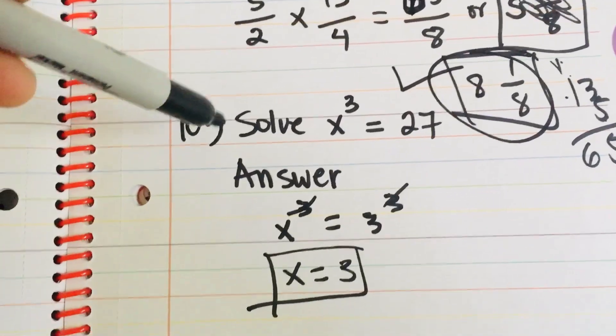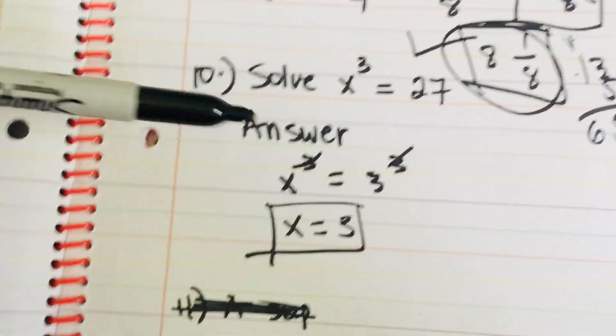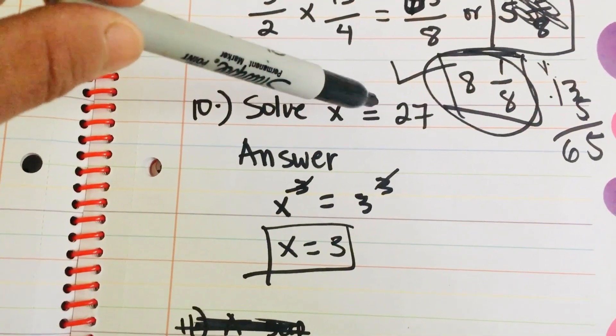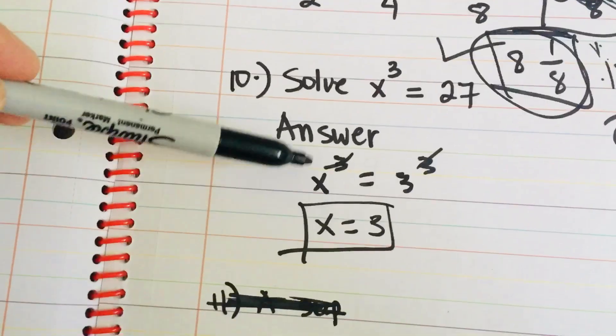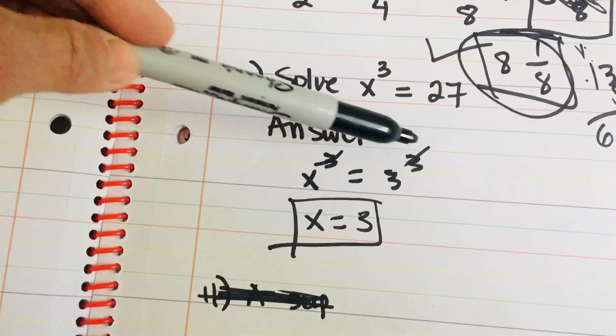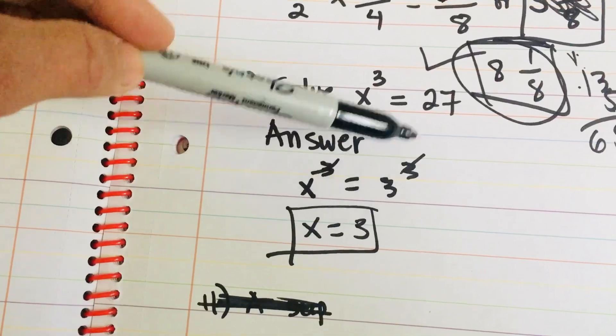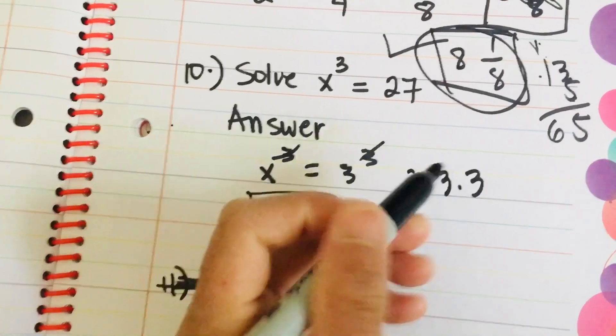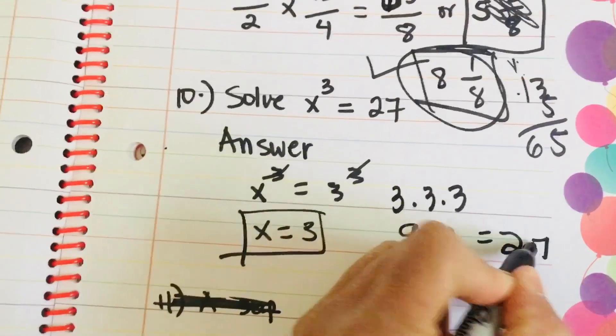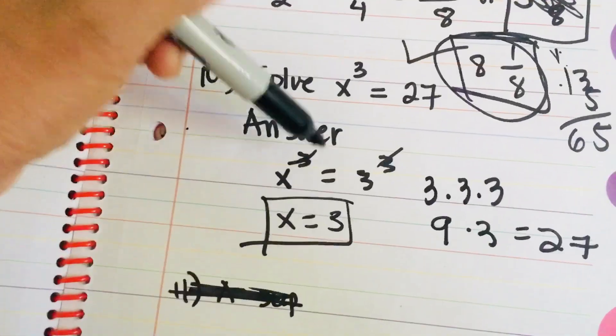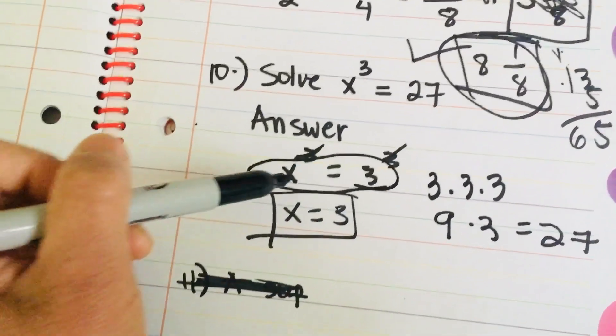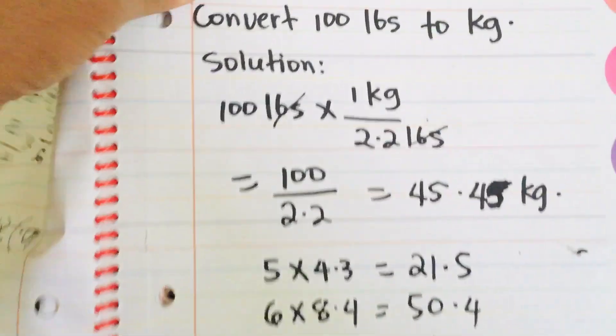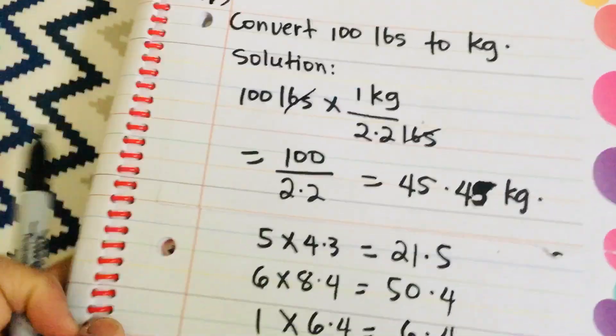Then, number 10. Solve x cubed is equal to 27. So, you have to simplify if the number on the right side is a perfect root. So, right here, I have x cubed is equal to 3 cubed. And, it goes like this. 3 times 3 times 3. 3 times 3 is 9. Times 3 equals 27. So, it's a perfect root. Then, you just have to cancel the exponent to find the value of x, which is 3. Now, the answer is x is equal to 3. So, all these math questions that I've used in here are similar to the ATI TEAS exam.